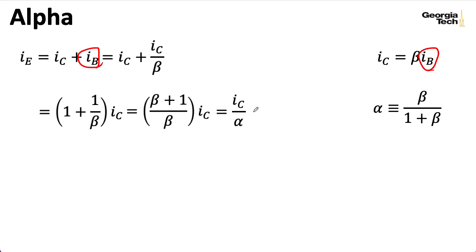So, let's rearrange that a little bit and we'll write that as beta plus 1 over beta. And then we'll define a parameter alpha that's beta over 1 plus beta. So, we can then write IE equals IC over alpha. So, we can rearrange that and write IC equals alpha times IE. And that gives us something analogous to our IC equals beta IB expression.